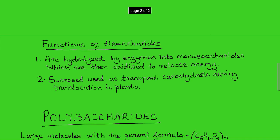Disaccharides are hydrolyzed by enzymes in living cells to yield the constituent monosaccharides. If it is maltose, it is broken down into glucose. If it is sucrose, it is broken down into glucose and fructose, while lactose is broken down into glucose and galactose. Fructose and galactose are then converted into glucose. Glucose is the main respiratory substrate that is oxidized to release energy, so once disaccharides have been hydrolyzed, glucose is oxidized to release energy.